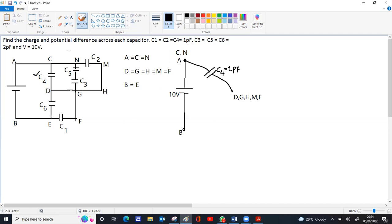C6 is between B and E. D is here, B and E are same point. So this is C6. C6 is 2 picofarad. So C6 is taken.